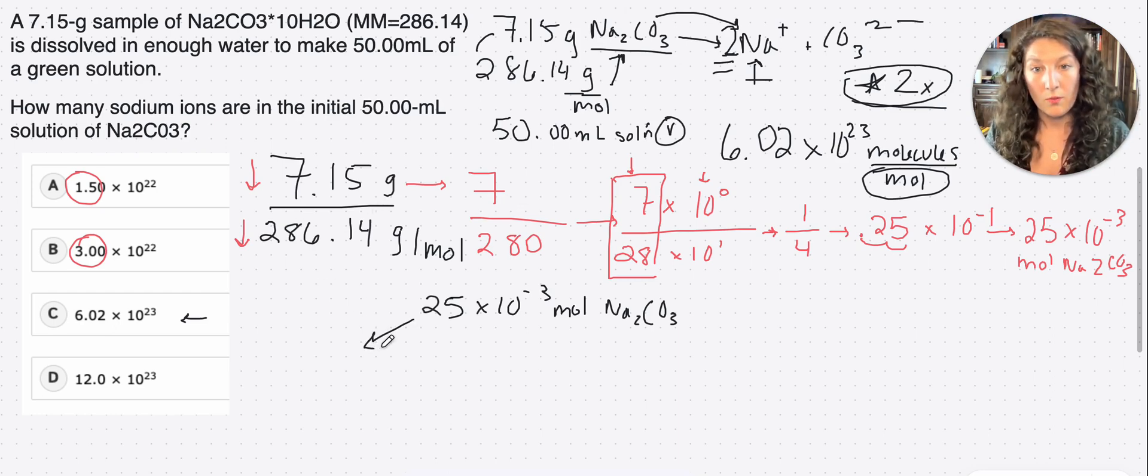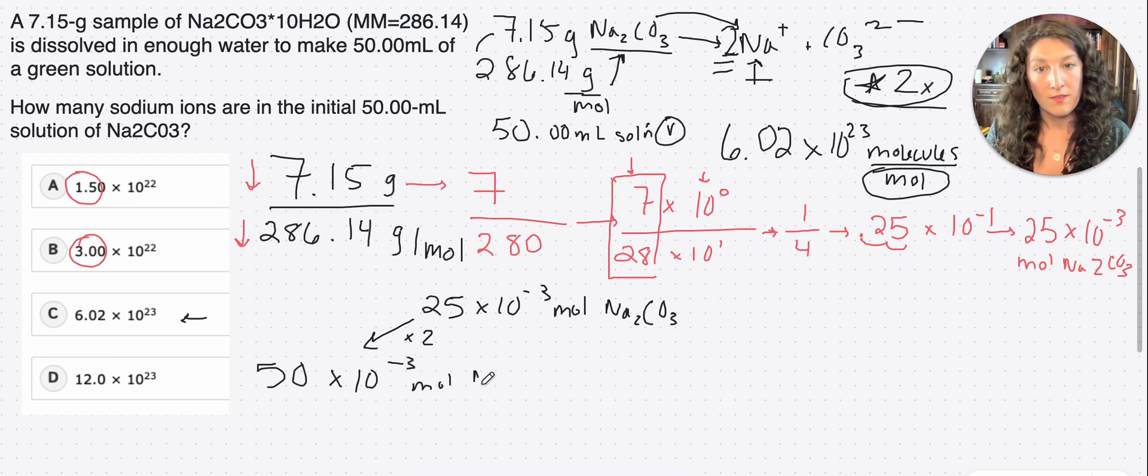Because for every one mole of the reactant, we have two moles of the sodium ion, so we need to double it. So all we can do there, we just multiply the value that we have by two, and we will get the moles of sodium ion. 50 times 10 to the negative 3 moles of Na plus. And then from there, we just need to utilize our Avogadro's number to get to molecules. Since molecules is on the numerator, we just multiply by Avogadro's number, right?